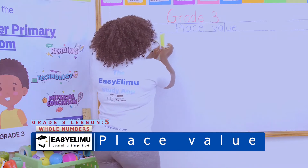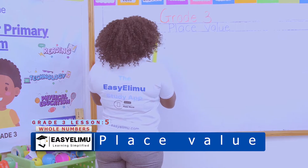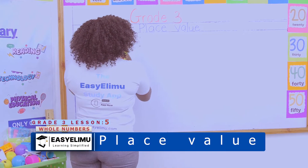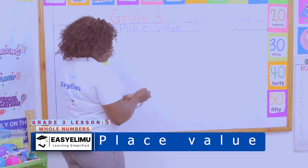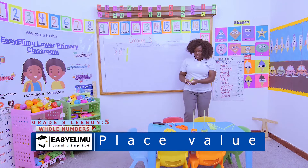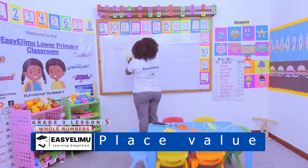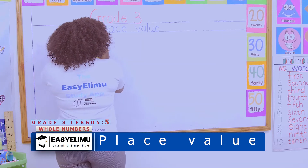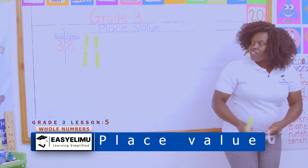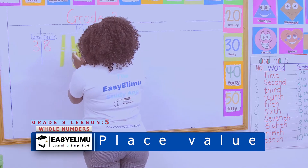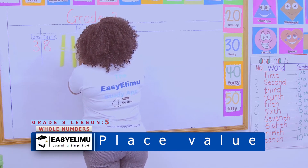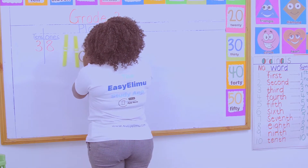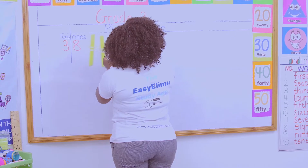One bundle of 10 sticks — so I have a 1-ten like that. And they have told me to show which number? To show the 3 tens and 8 ones. Then I come here again. I have another bundle of 10 sticks. So how many bundles of 10 sticks do I have? I have 2 bundles of 10 sticks. But the question says they want 3 bundles of 10 sticks, so I'll add another one. 3 bundles of 10 sticks, and they are here with me. Now I have 3 bundles of 10 sticks.